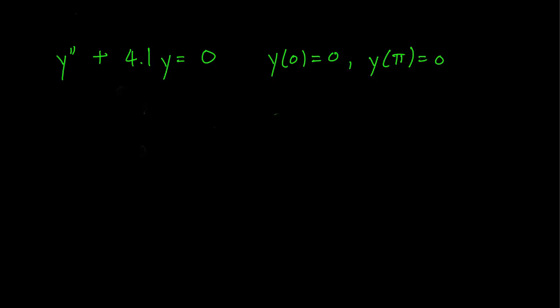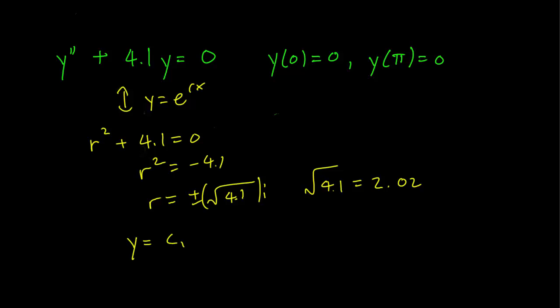Let's make our usual substitution. We have r² + 4.1 = 0. r² equals -4.1. So r is ±√4.1 times i. First of all, let's calculate that the square root of 4.1 is 2.02. And this gets us y = c₁cos(2.02x) + c₂sin(2.02x).